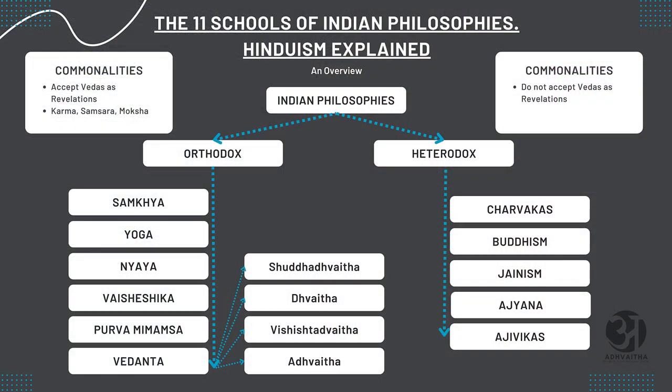We need to understand Sanatana Dharma as an open culture which gave a lot of emphasis on seeking and realizing. It had an open and flexible structure which allowed for individual thinking. People were free thinkers who engaged in intellectual debates and reasoning to come to different conclusions, and because of this, different philosophies and different schools of thought emerged.